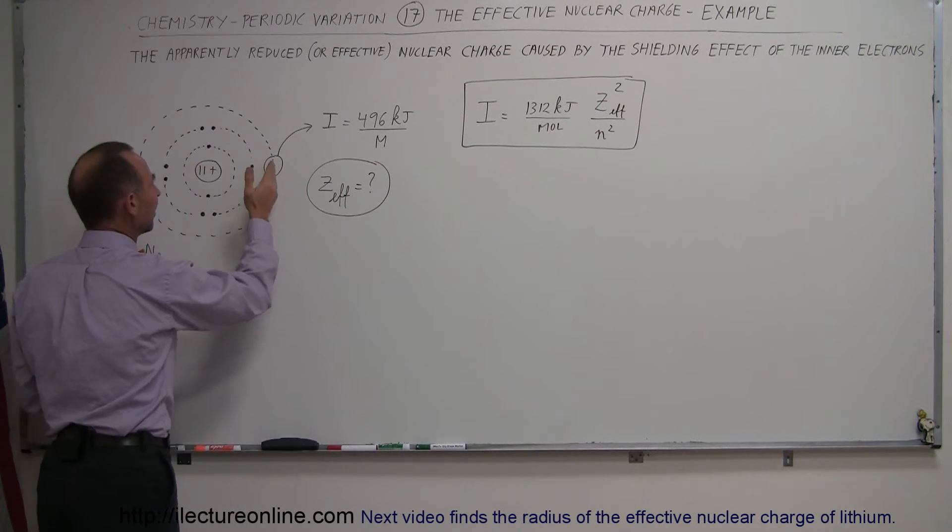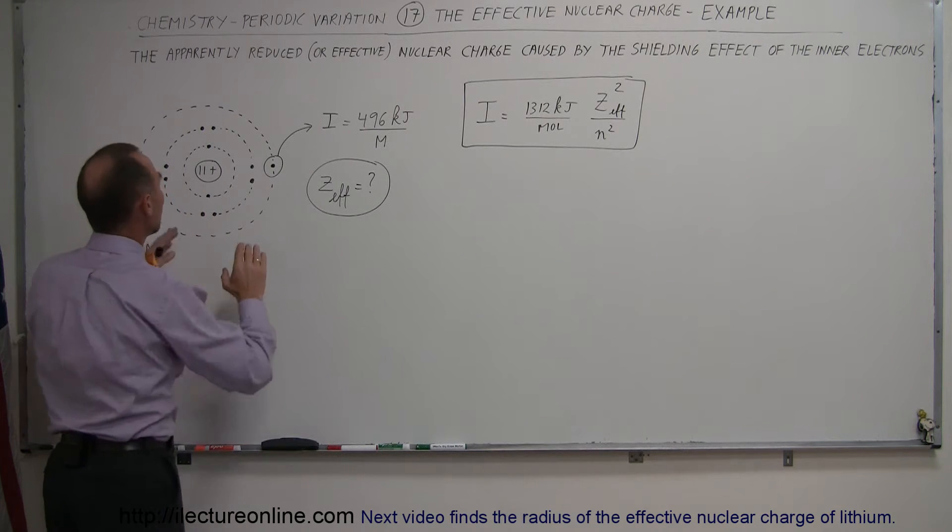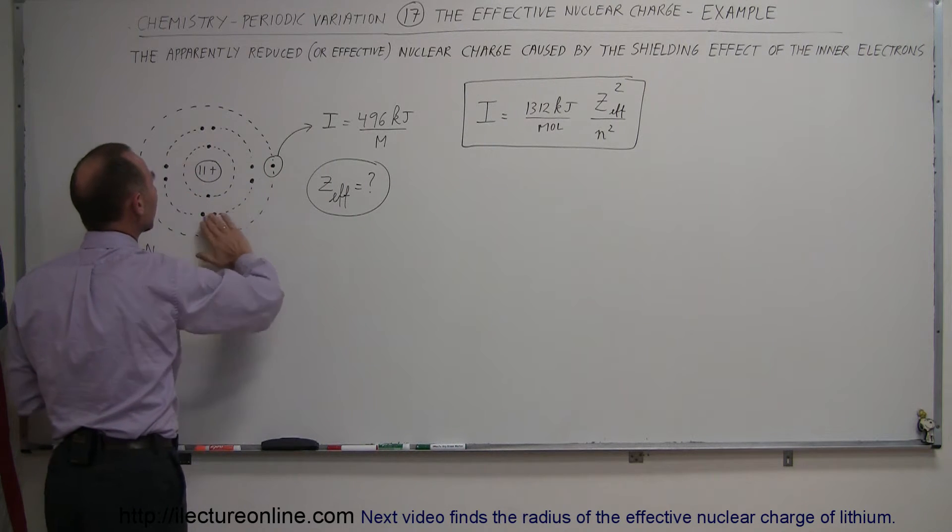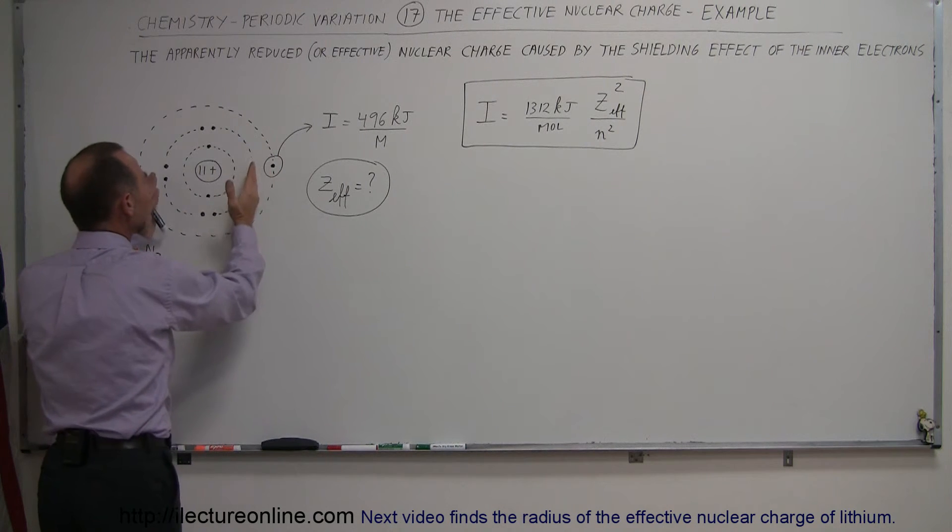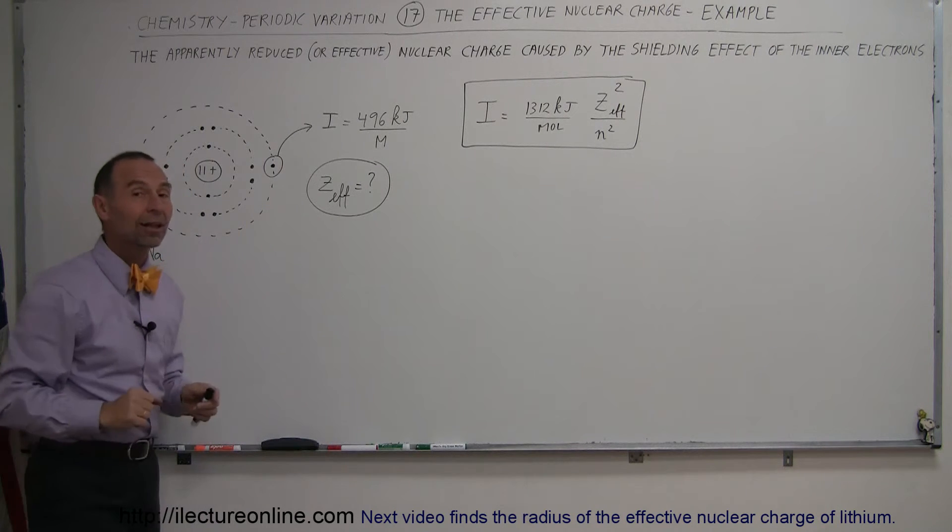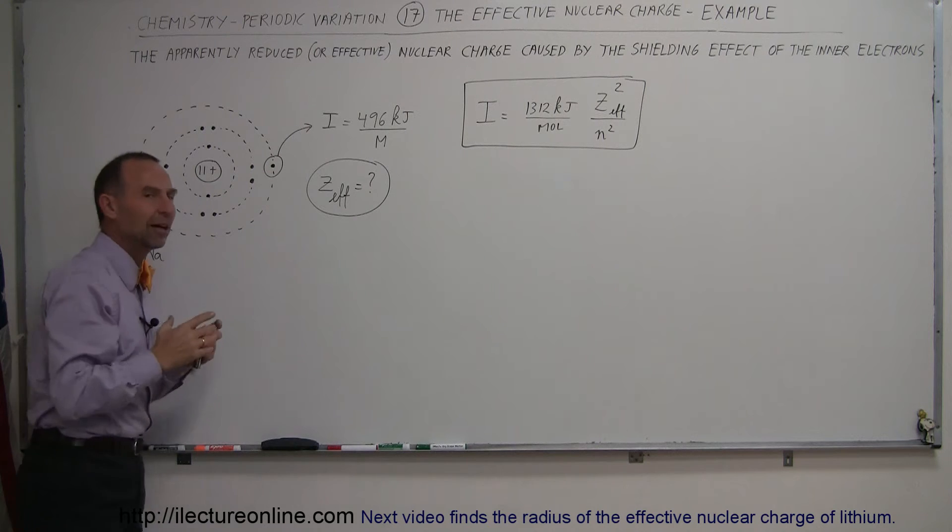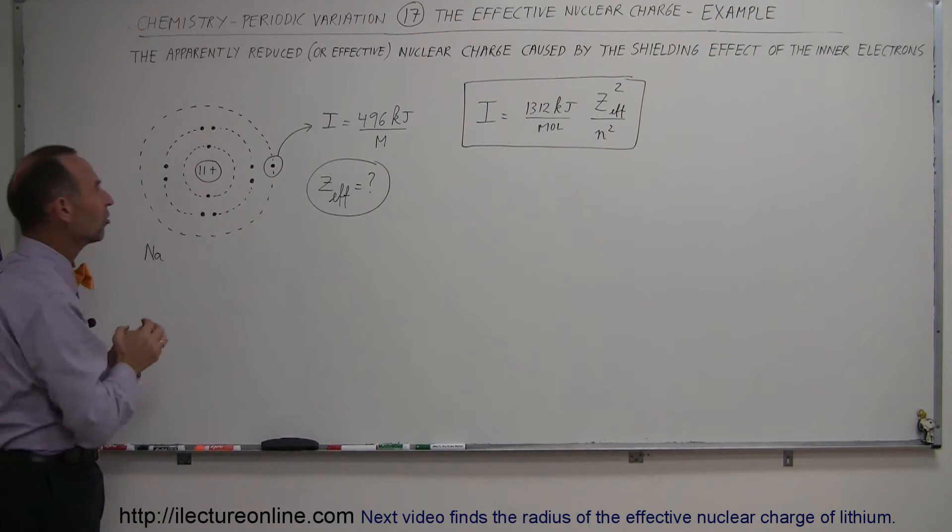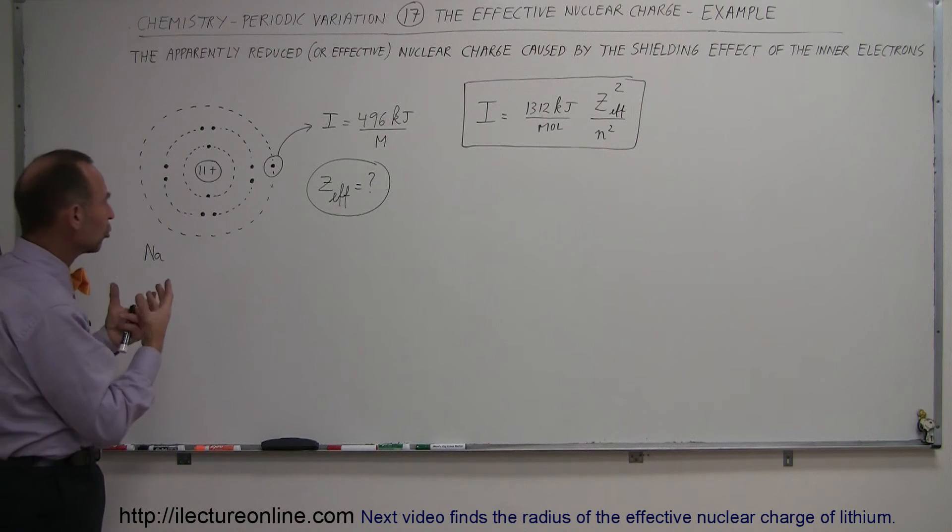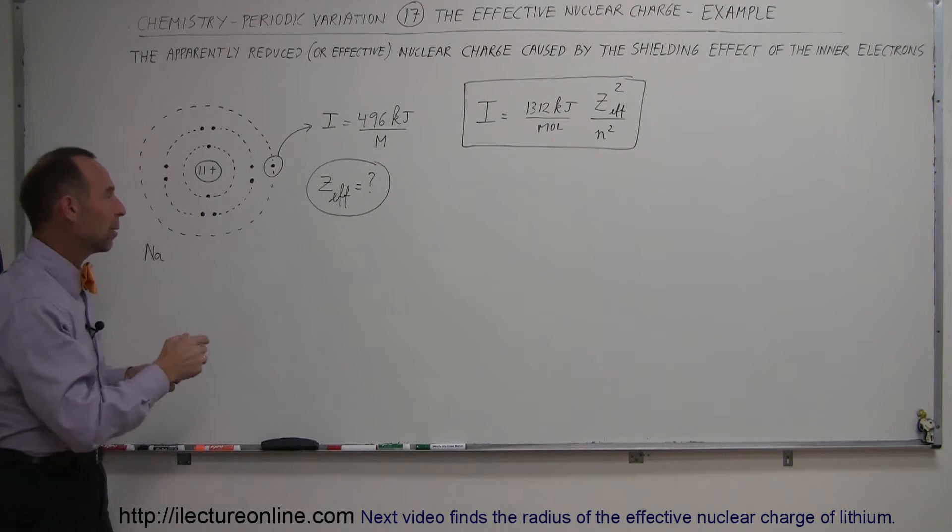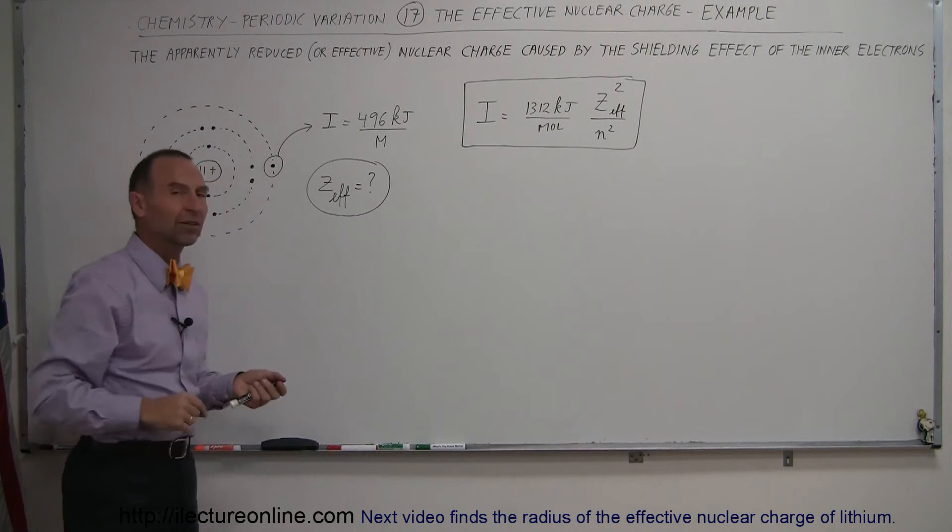The nuclear charge this electron appears to see because of the shielding effect of those other 10 electrons that are in inner orbit relative to this last electron. So this electron doesn't see as if there's an 11 positive charge nucleus there. It sees a nuclear charge that is the Z-effective, and we're trying to find out what that Z-effective is.